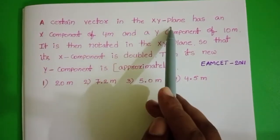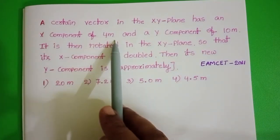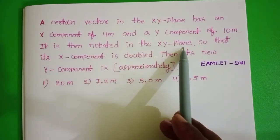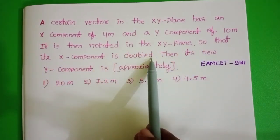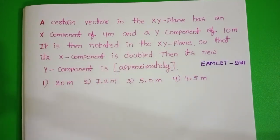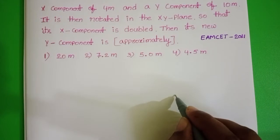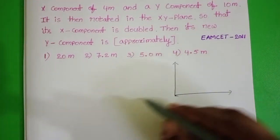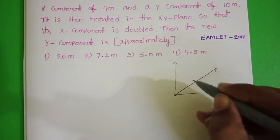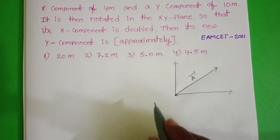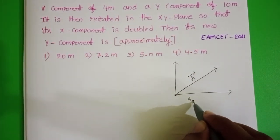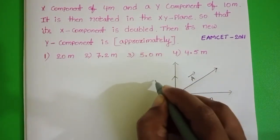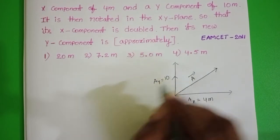A certain vector in the xy plane has an x component of 4 meters and y component of 10 meters. It is then rotated in the xy plane so that its x component is doubled — find its new y component. Initially a vector is in the xy plane. Let it be a bar. The x component ax equals 4 meters and the y component ay equals 10 meters.